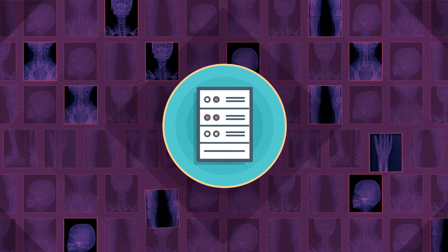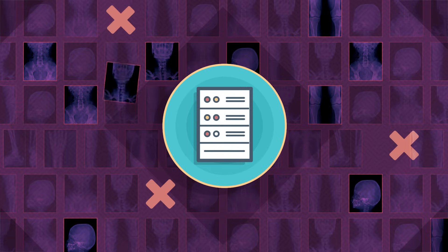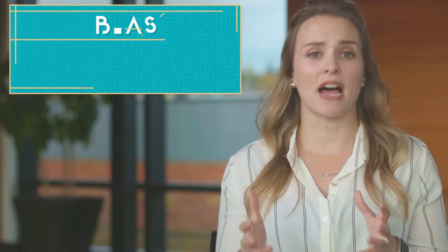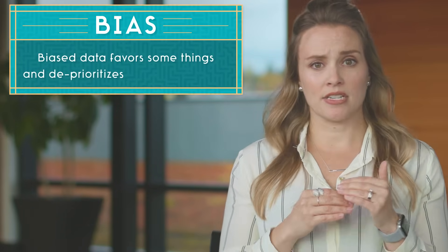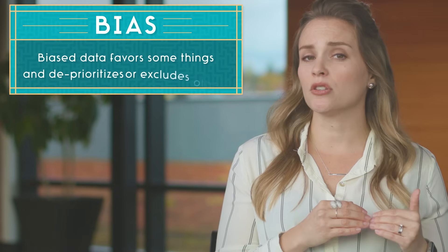Even with thousands of examples, there can be problems with the computer's predictions. If x-ray data is only collected from men, then the computer's predictions may only work for men — it may not recognize diseases when asked to diagnose the x-ray of a woman. This blind spot in the training data creates something called bias. Biased data favors some things and deprioritizes or excludes others.